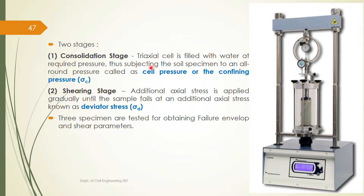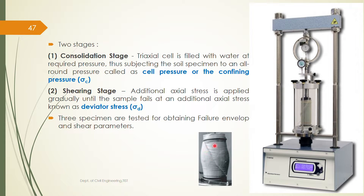As previously discussed, the shear test is conducted in two stages. The first stage is the consolidation stage and the second stage is the shearing stage. In the consolidation stage we apply the cell pressure or confining pressure, denoted by σc, which acts all around the soil sample in all directions through the water. In the shearing stage we apply the axial stress, also known as deviator stress, denoted by σd. σd is increased and at one particular point the soil will fail.